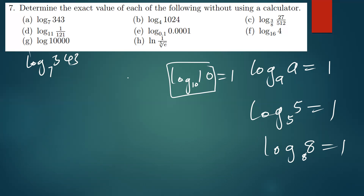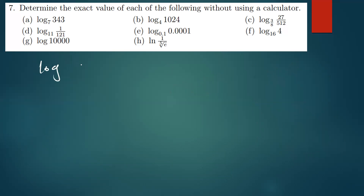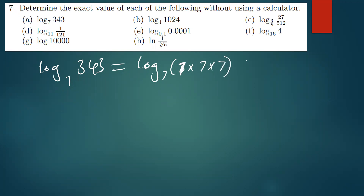So the first question is log of 343, base 7. The log of 343 base 7 can also be written using the fact that 7 times 7 gives us 49, and 49 times 7 gives us 343. So 343 can be written as 7 times 7 times 7.